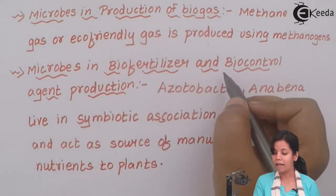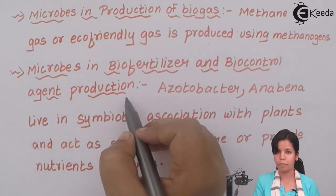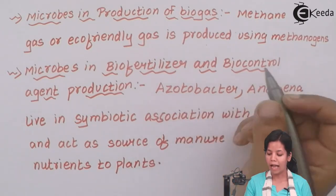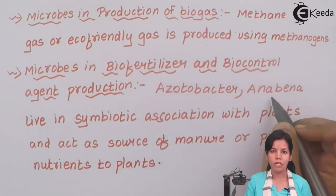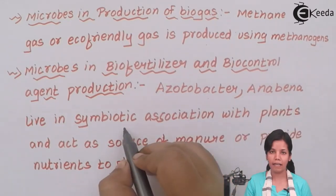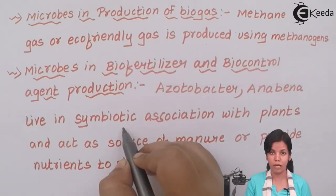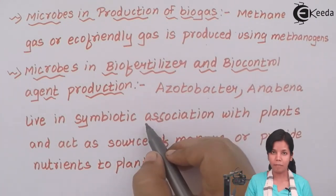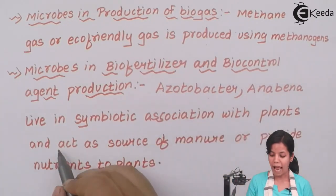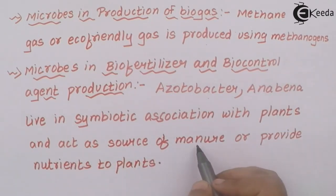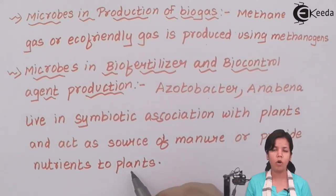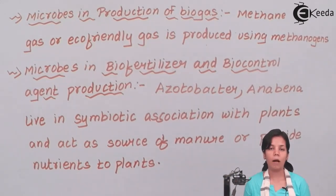The next use of microorganisms is in bio fertilizers and biocontrol agent production. An example would be Azotobacter and Anabaena. These are microorganisms that live in symbiotic association with plants — meaning a give-and-take relationship. The plant helps the microorganism by providing food, and in return the microorganism helps the plant. They act as a source of manure or organic nutrients such as nitrogen or phosphorus, depending upon the organism.